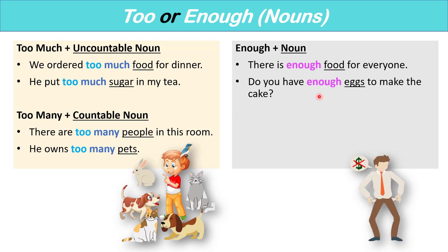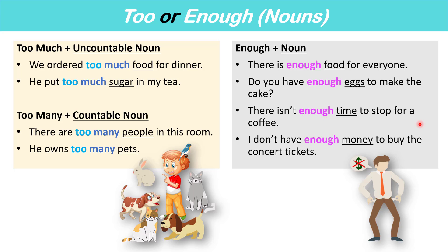Do you have enough eggs to make the cake? That means do you have a sufficient amount of eggs. There isn't enough time to stop for a coffee — we don't have a sufficient amount of time. I don't have enough money to buy the concert tickets. Imagine a concert ticket is $50 and I only have $40 — I don't have the sufficient amount of money to buy the concert tickets.